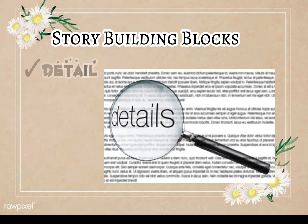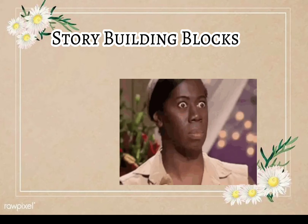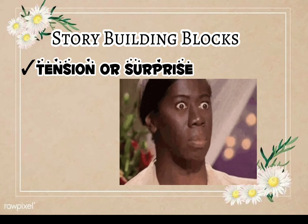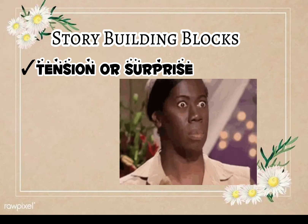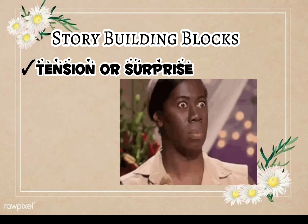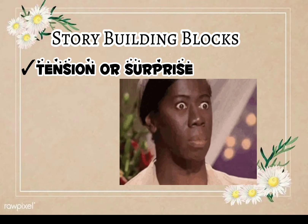Fourth is the detail. Well-chosen details help the audience understand a story or character better. Reporters need to be keen observers so they can collect details that will improve their story, even looking for multiple sources of information. The fifth building block is tension or surprise. The story should make the audience want to know what happened or how it will all come out in the end.